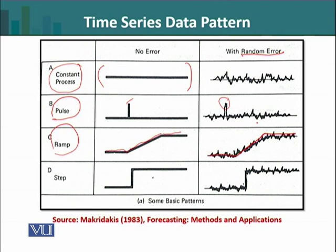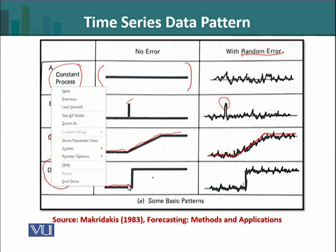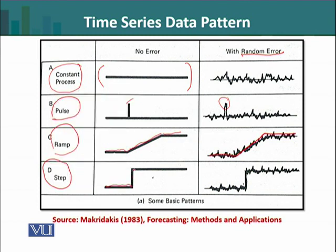The last type of data pattern is called a step pattern. In this, the data stays at a certain level, and then it takes a sudden jump. After the jump, it settles at a new horizontal level. Without error, this movement is completely smooth, but the presence of random error makes it a bit noisy, though the general pattern remains the same. The constant process forms a horizontal line, and the pulse process has a horizontal line then a jump, then returns to its original level.